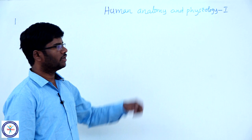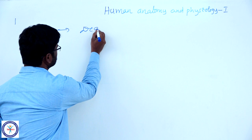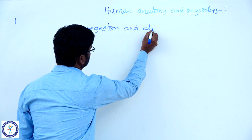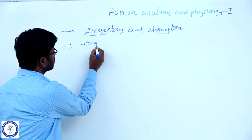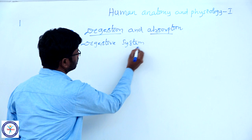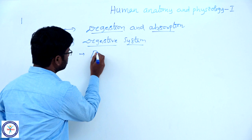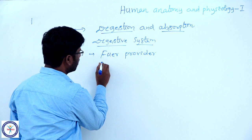Hello students, today I would like to discuss a small part of Animal Organismal Physiology 1. The name of the lesson is Digestion and Absorption. The digestive system is generally called as fuel provider and life sustainer.